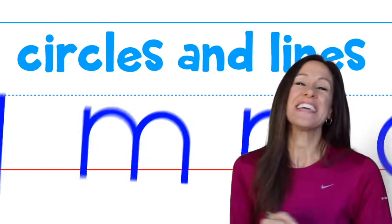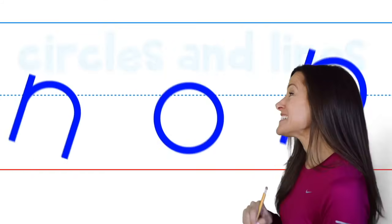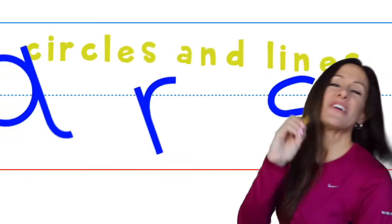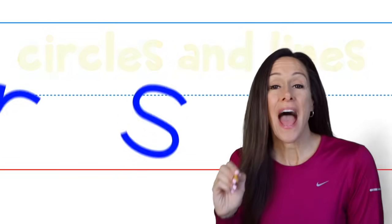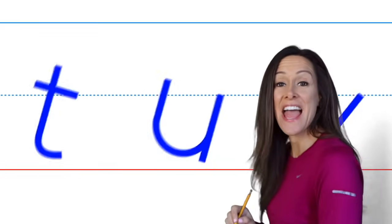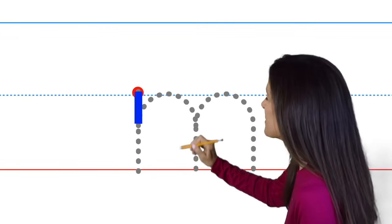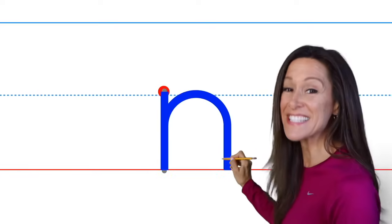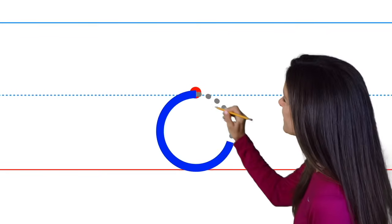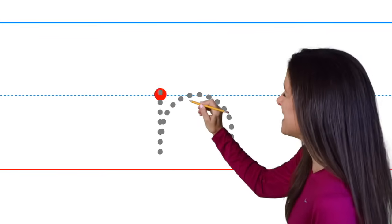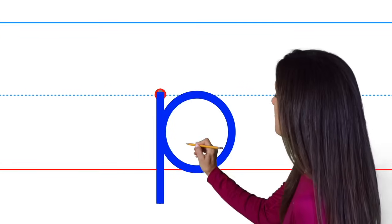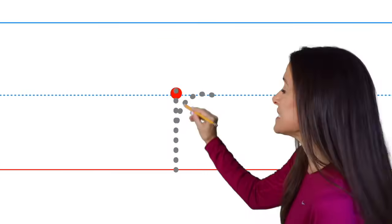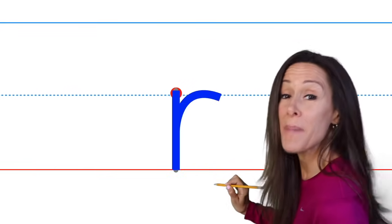Circles and lines, circles and lines. These are the letters with circles and lines. Circles and lines, circles and lines. Let's write them out one at a time. M is a line with two hills to the right. N is a line with one hill in sight. O is a circle that goes around, don't stop. P is a low line with a circle on the top. Q is a circle line down, curve to the right. R is a line with a rounded line up high.